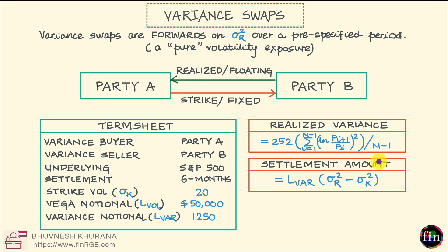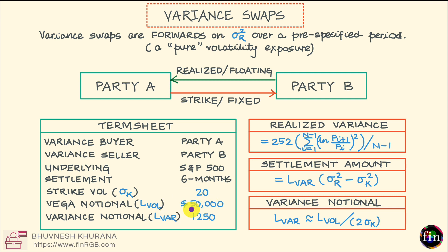What enters into the payoff of this variance swap is not the vega notional but the variance notional, also called the contract notional or number of variance units. This number can be approximately calculated given the vega notional and the strike volatility using the formula: variance notional = vega notional divided by (2 times strike vol). Using these numbers, 50,000 divided by (2 times 20), gives a variance notional of 1,250. Using variance notional 1,250, realized vol of 21, and strike vol of 20, you can confirm that the payoff will be very close to the vega notional of $50,000.